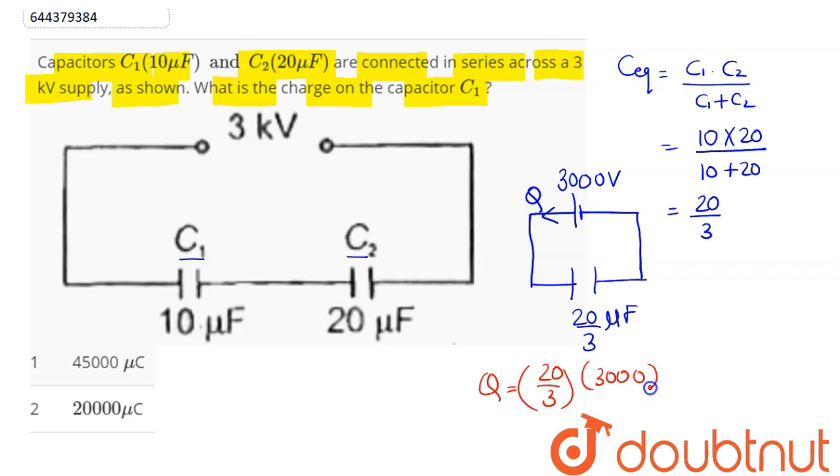So we can say here this comes as 20000 microcoulomb, the charge supplied by this source. So this charge goes to the capacitor C1. This is plus Q, this is minus Q. Since both are in series, charge will be same on both the capacitors.